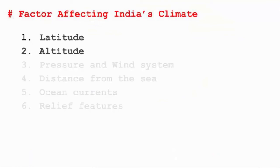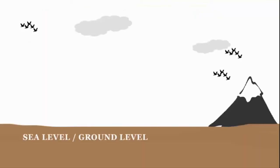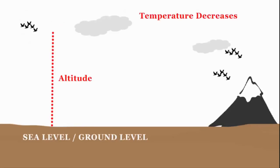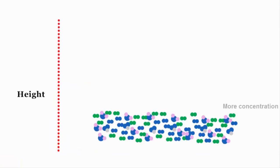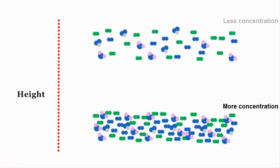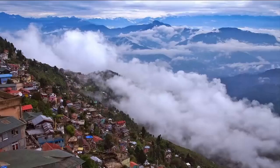The second factor is altitude, which means height. The more you go above the ground — from the surface of the Earth to higher altitudes — the temperature decreases because the concentration of air molecules decreases; we also call it thin air. That's why when you go to hill stations, it's cool out there.